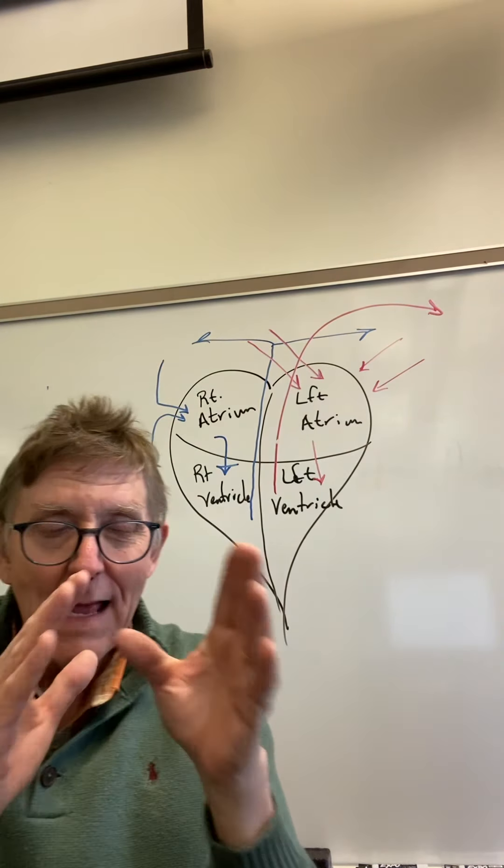The term we use for these functional groups of cardiac muscle cells is syncytium. We have an atrial syncytium and a ventricular syncytium. As soon as one cardiac muscle cell in the atrial syncytium starts to contract, it communicates with all the rest of them. And as soon as one ventricular cardiac muscle cell starts to contract, it communicates with the others. This is how the two parts of the heart contract at slightly different times — lub-dub.